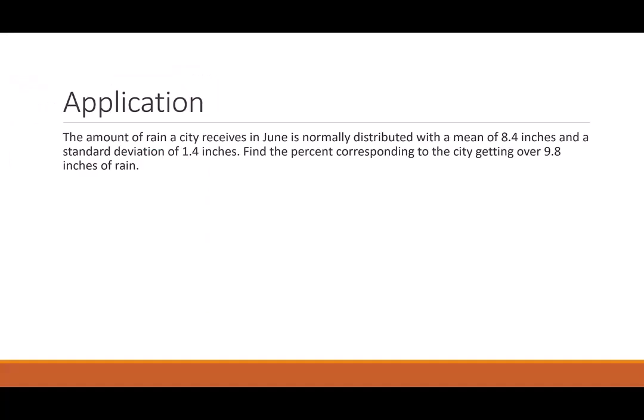So let's look at another application. Let's say that the amount of rain a city receives in June is normally distributed with a mean of 8.4 and a standard deviation of 1.4 inches. We want to find the percent corresponding to the city getting over 9.8 inches of rain. So we can pull out the things we have. We have 8.4 as our mean. We have 1.4 as our standard deviation. And then our data point is 9.8.